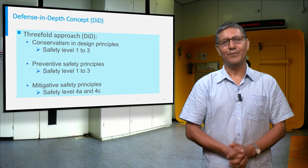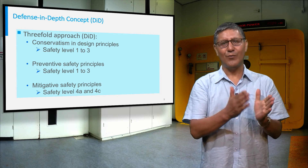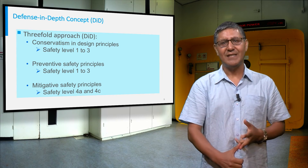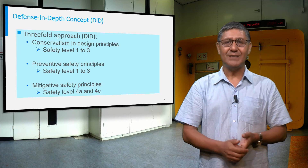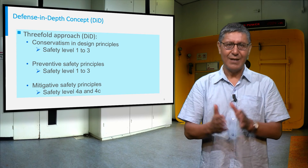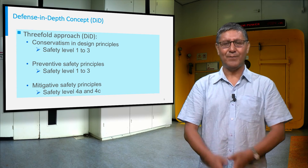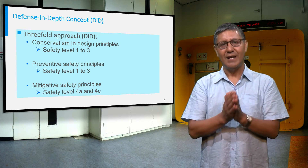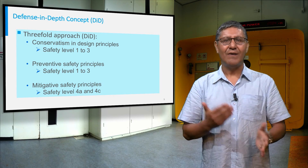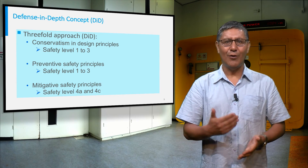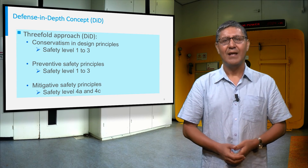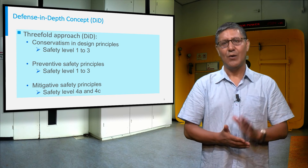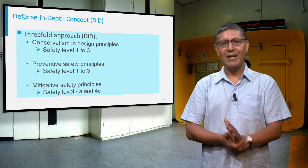Safety levels are defined from one to four: normal operation, operational occurrences, design basis accidents, and beyond design basis accidents. For each safety level, a protection goal is defined. Next, the systems foreseen to cope with the event at each safety level are listed, and the procedures developed for each safety level are defined. Safety levels one to three are purely preventive, while level four is mainly mitigative.